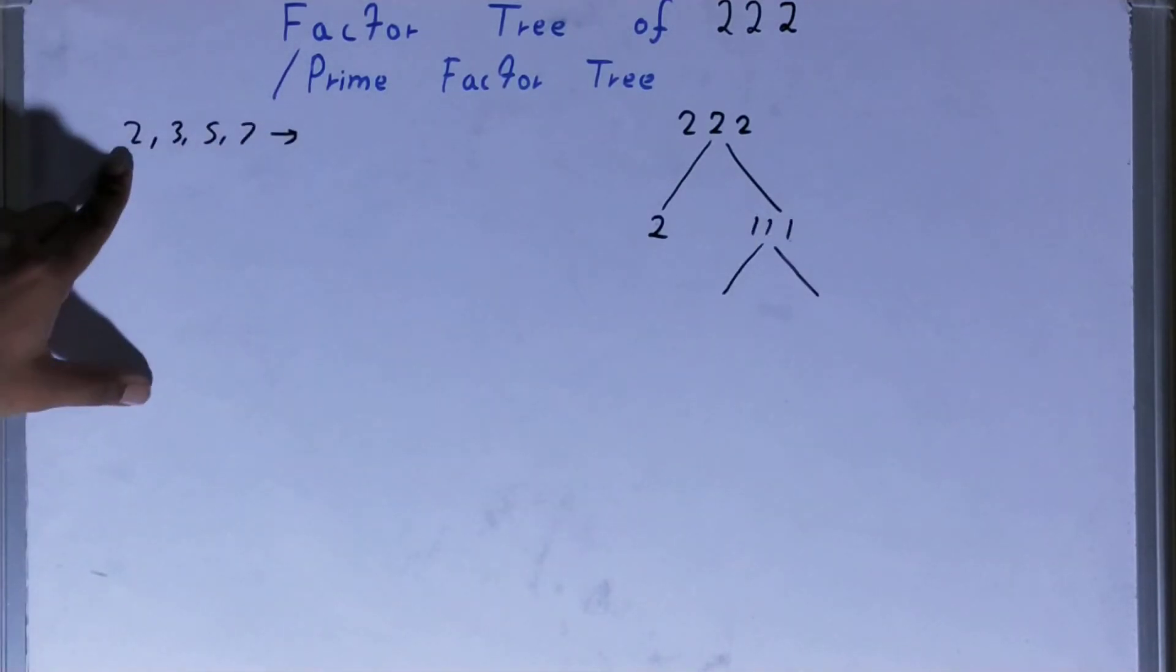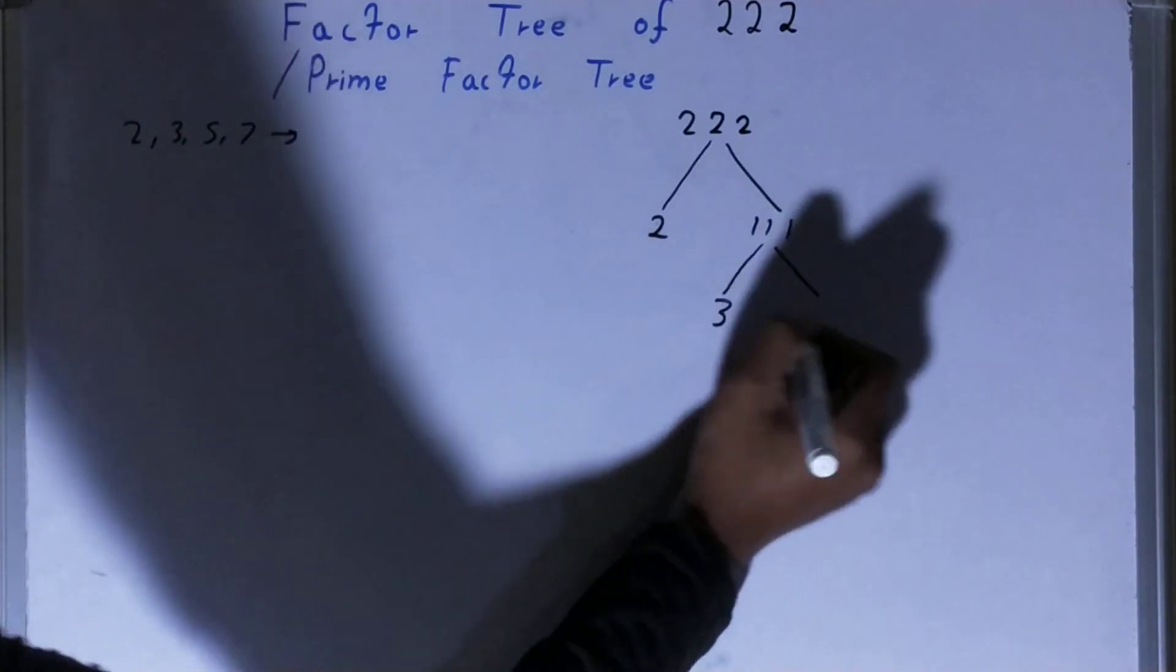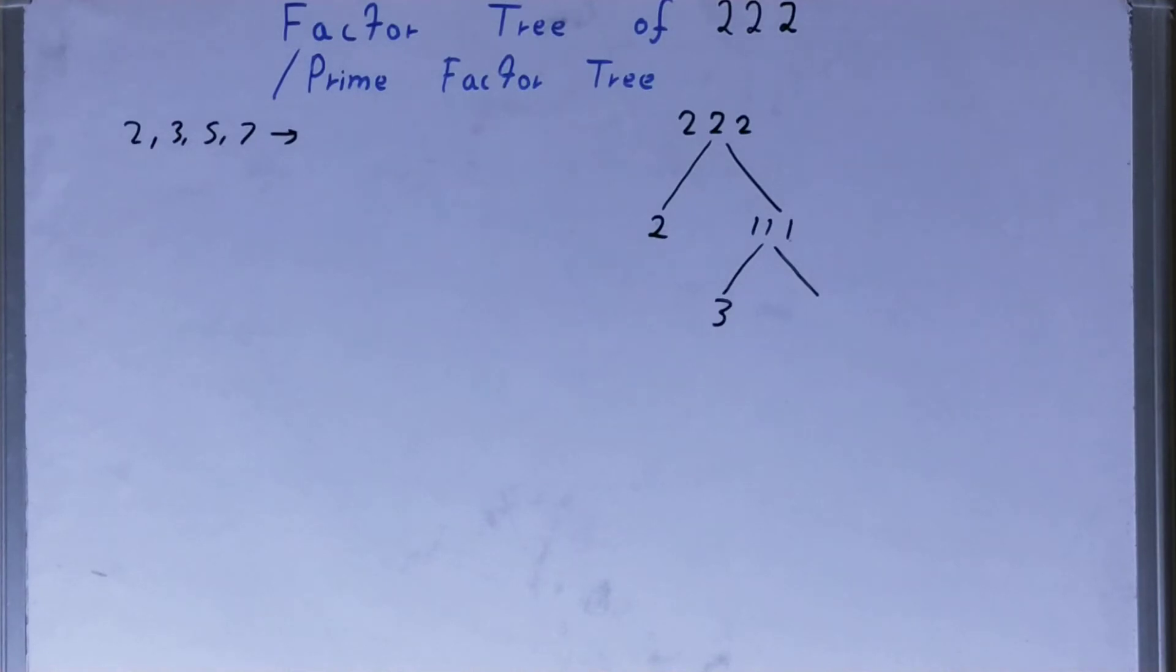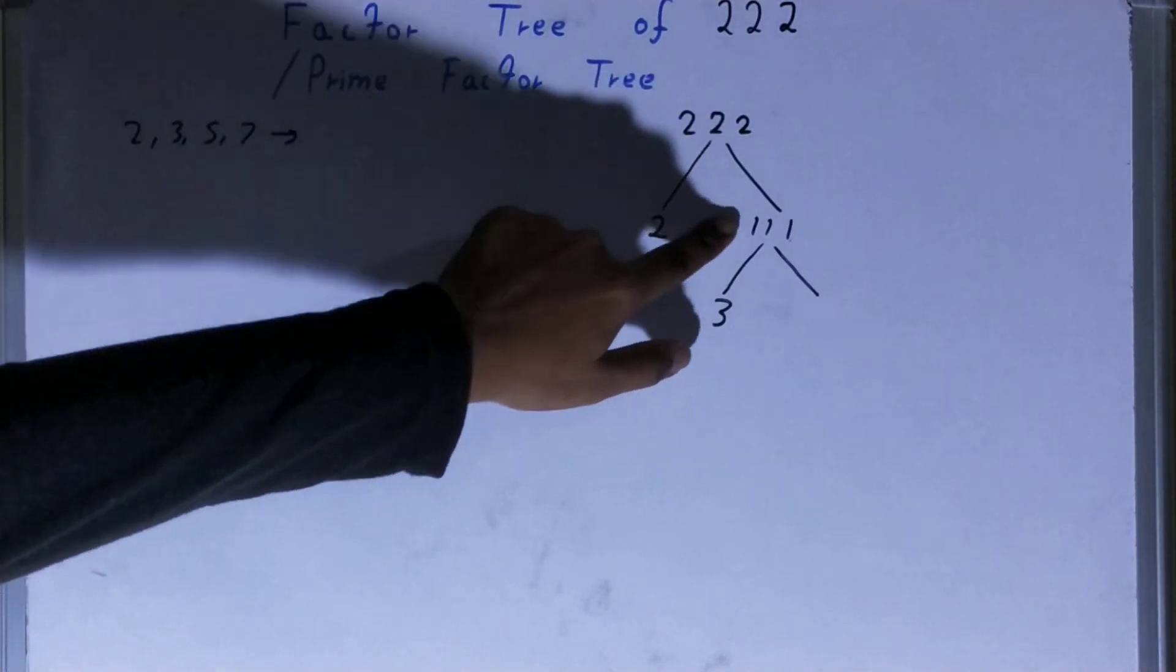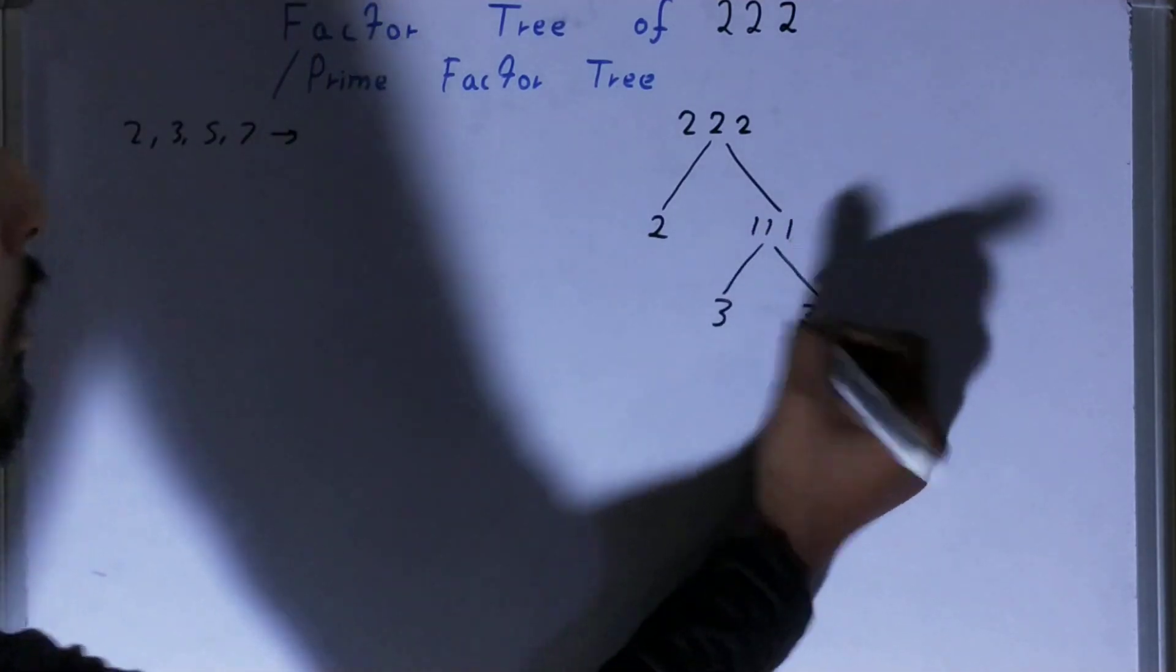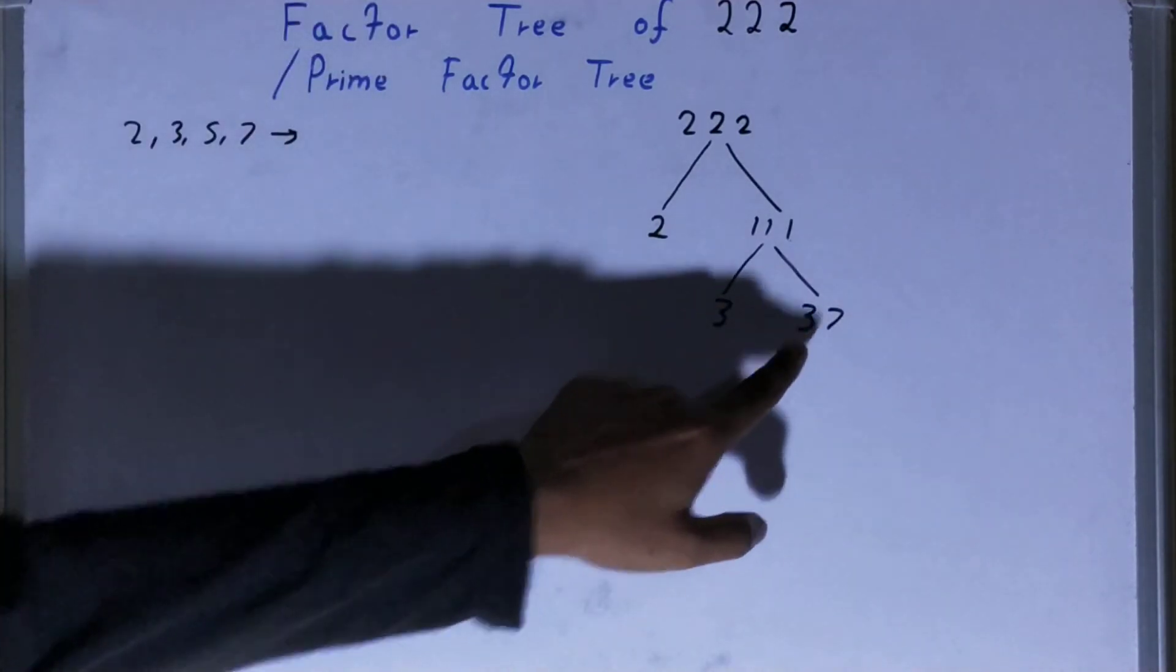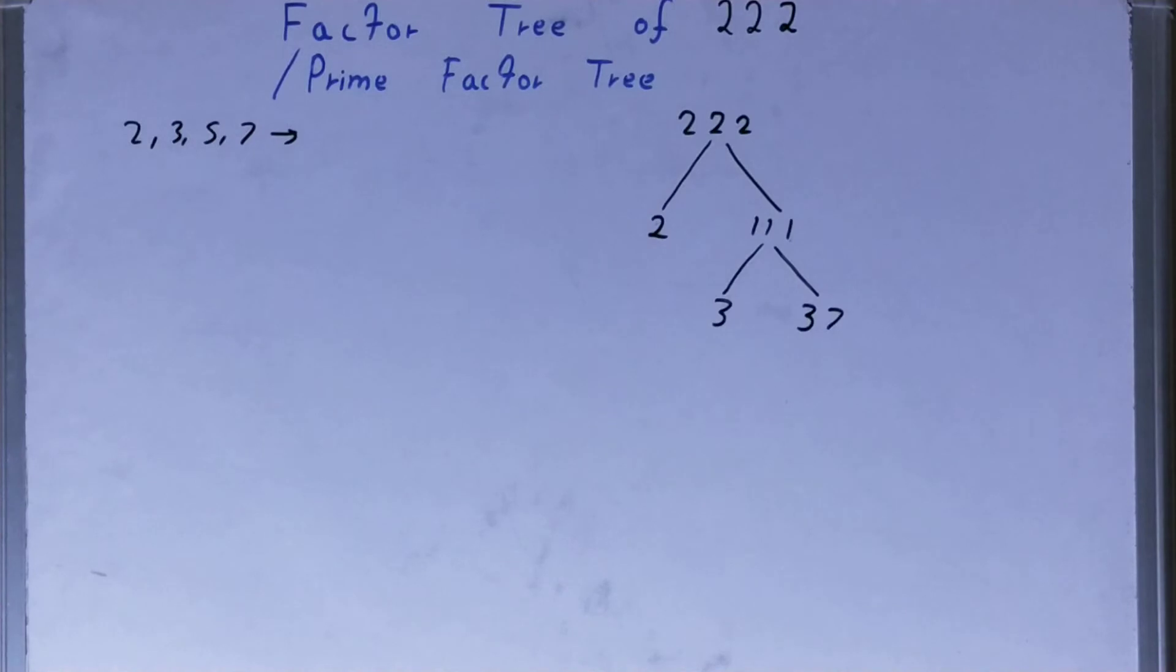And we'll check it from here. Is the number 111 divisible by 2? No. Is it divisible by 3? Yes, so one of the numbers will be 3, the other will be whatever we get after dividing. So 111 divided by 3, what we get? We get 37. Now do we need to factorize this 37 further on in the same way?